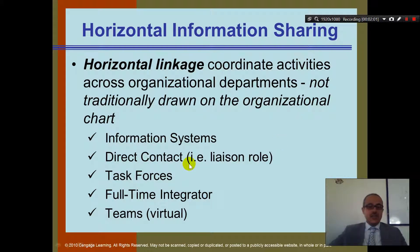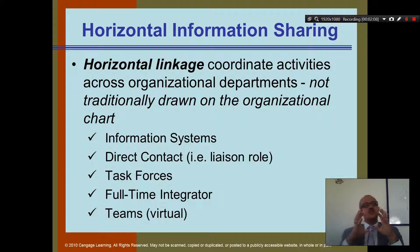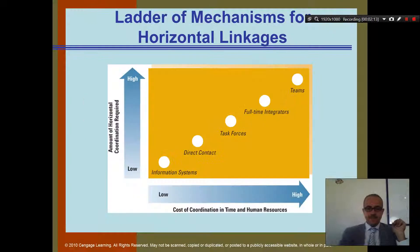Direct contact is when one department talks to another department directly. Or through a liaison — a middle person who connects these departments.